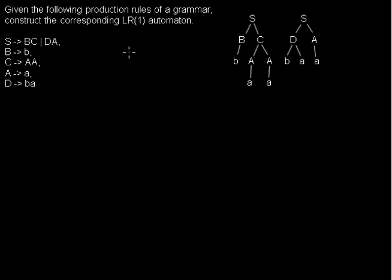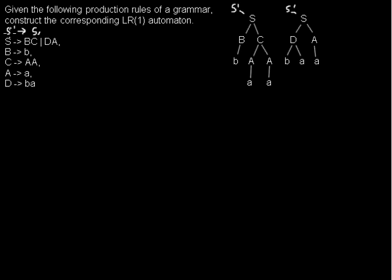I'd like to show you how to construct the LR(1) automaton for this grammar. As always, S is our start symbol, but we have to add a new rule where S' expands to S. That's because we may have S on the right-hand side of a rule, but we want to find a symbol that spans the whole input. That's why we always add a new rule for that.